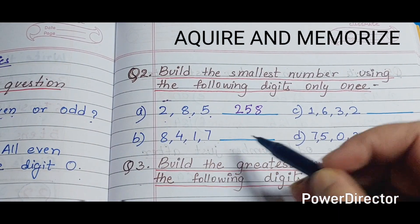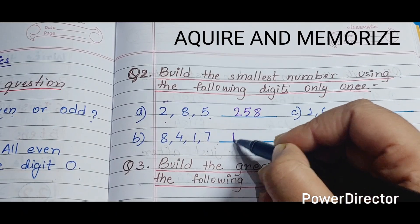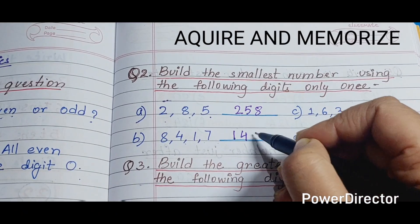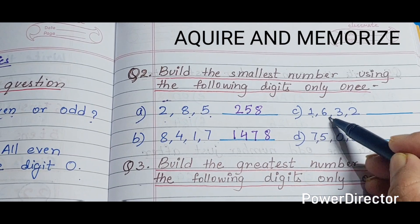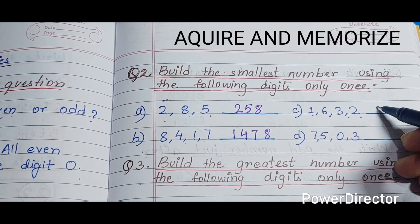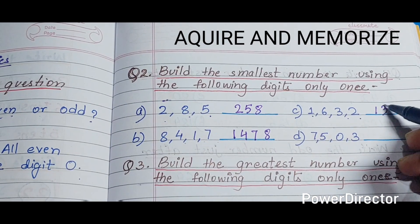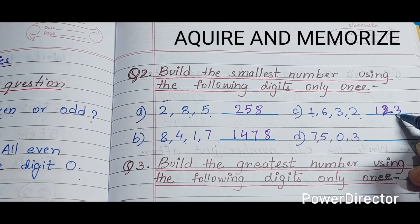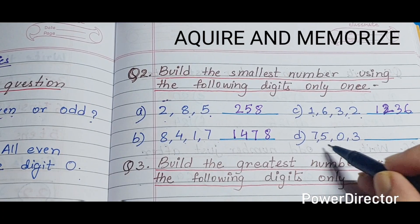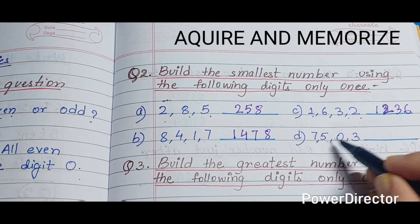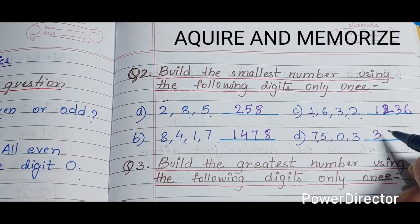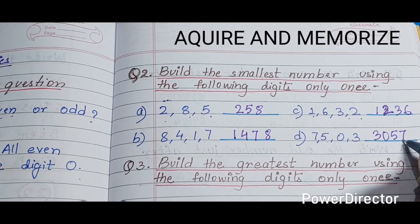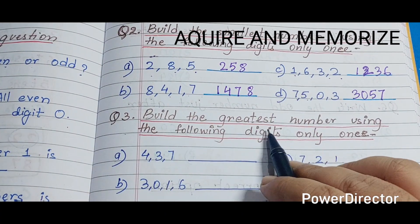Next, with digits 8, 4, 1, 7 the smallest number is 1478. Next, with digits 1, 6, 3, 2 the smallest number is 1236. Next, with digits 7, 5, 0, 3 the smallest number is 3057.